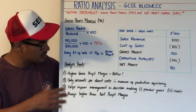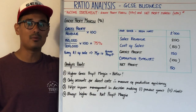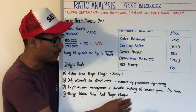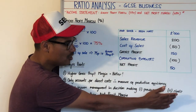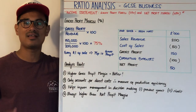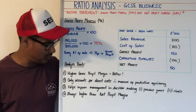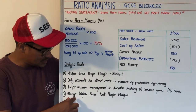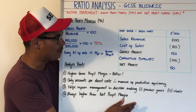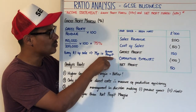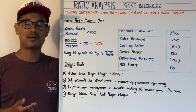Number three is that it's useful for stakeholders, particularly management, to help inform their decision making. They might look at the gross profit margin for previous years to see if it's improving or worsening, or compare it against rivals to see where they stand in the industry — average, above average, or below average. Number four is that your gross profit margin is always going to be higher than your net profit margin, because when calculating net profit margin you have to deduct your operating expenses.